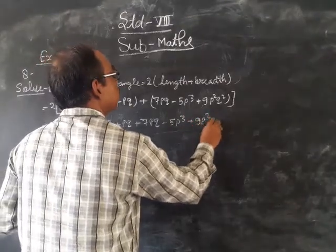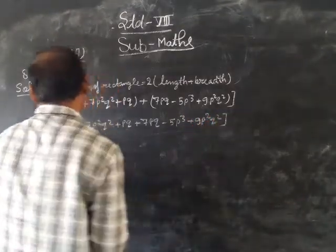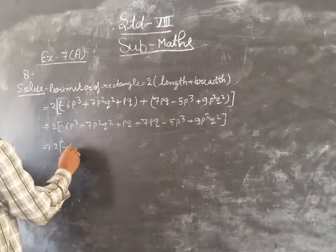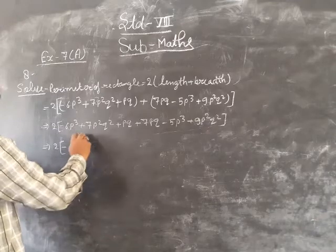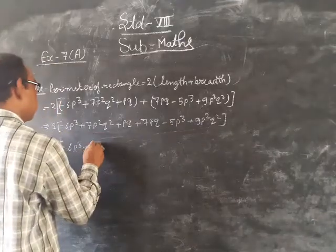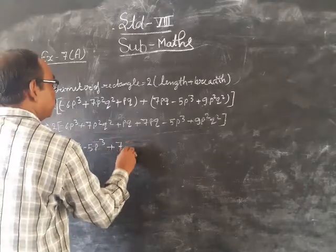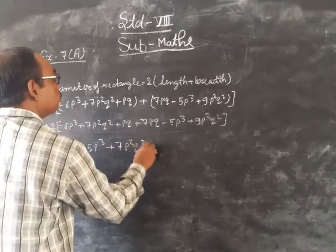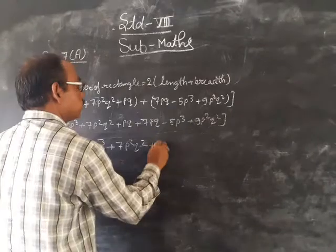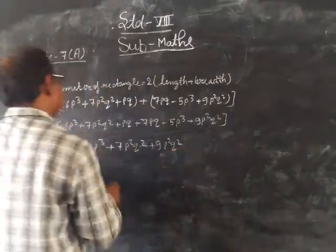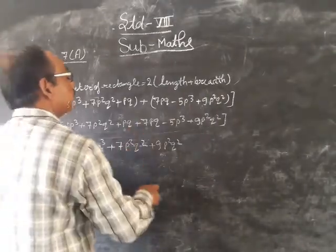Perimeter of rectangle equals to 2 times bracket. Rearranging, we have 7p²q² plus 9p²q², next plus p cube plus 7p cube.